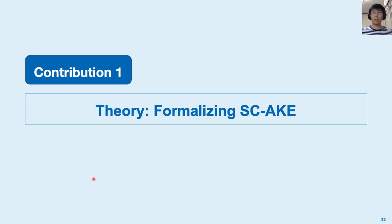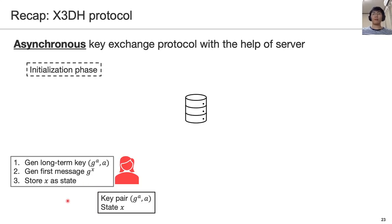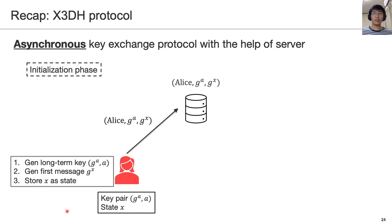I will get into the details. We first talk about the first contribution: the formalization of the SC-AKE protocol. I would like to begin with the X3DH protocol. The X3DH protocol is an asynchronous key exchange protocol with the help of the server. We explain the protocol flow. First, Alice generates her long-term key pair — a and g^a — and the first message g^x. Then Alice sends her public key and the first message to the server. We note that in the initialization phase, Alice does not know who will communicate with her in the future.